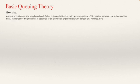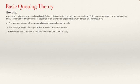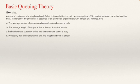In this video, I saw an exercise asked by one student. The exercise says: arrivals of customers at a telephone booth follow a Poisson distribution with an average time of 10 minutes between one arrival and the other. The length of the phone call is assumed to be exponentially distributed with a mean of three minutes. Find: (a) the average number of persons waiting and making telephone calls, (b) the average length of the queue formed from time to time, (c) the probability that the customer arrives and finds the telephone booth is busy, and (d) the probability that the customer arrives and finds the telephone booth is empty.